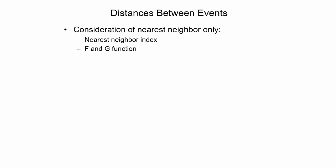Nearest neighbor-based point pattern measures, which were described in the previous presentation, take into account the distance between a point event or random point and the nearest other event in a point pattern. This group of measures, including the nearest neighbor index and the F and G functions, represent a subcategory of distance-based point pattern measures. Measures that only make use of the nearest neighbor have the drawback that nearest neighbor distances can be very short relative to other distances in the pattern, and therefore mask other structures in the pattern.